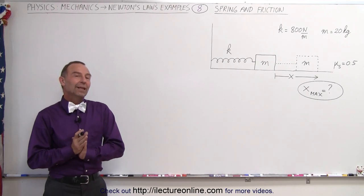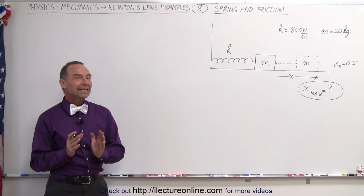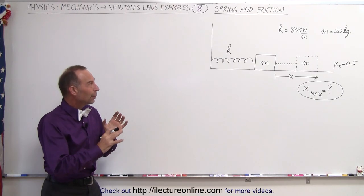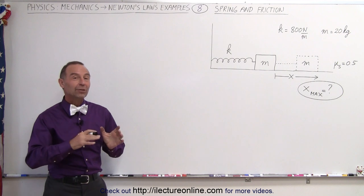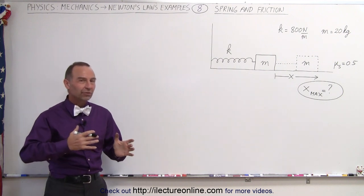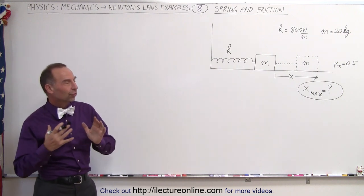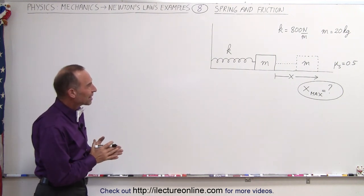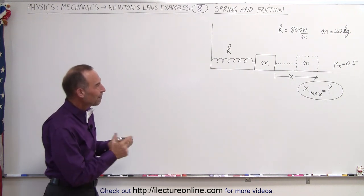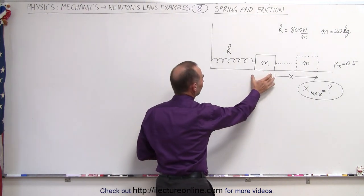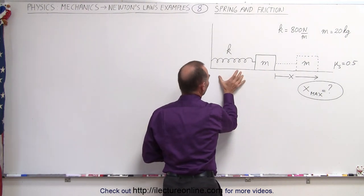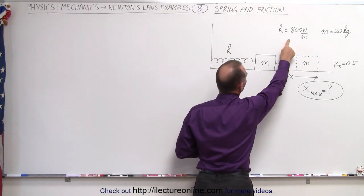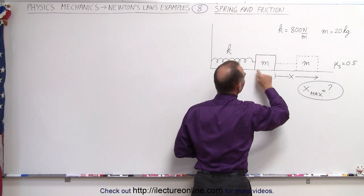Welcome to ElectronLine. Here's another good example to help us understand Newton's laws and friction in certain setups. We have a mass attached to a spring that has a spring constant of 800 newtons per meter.